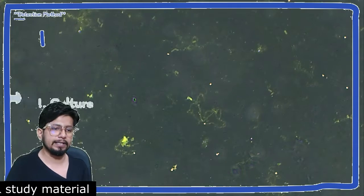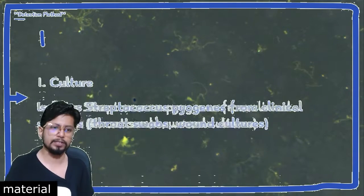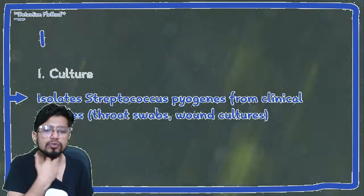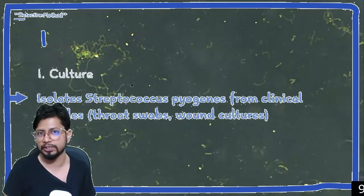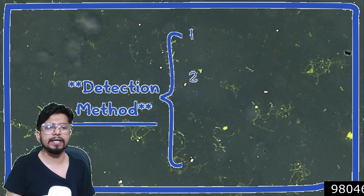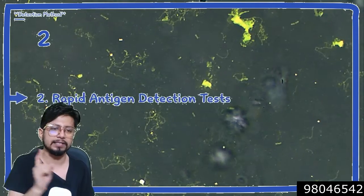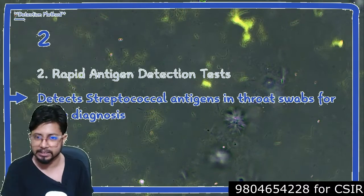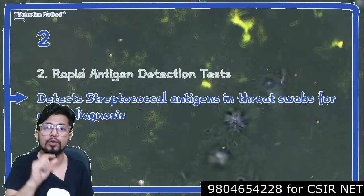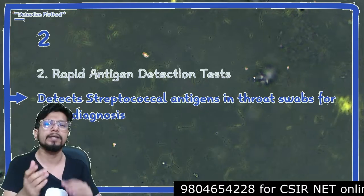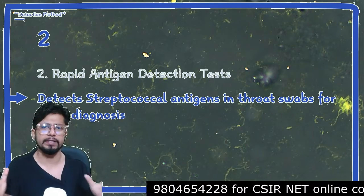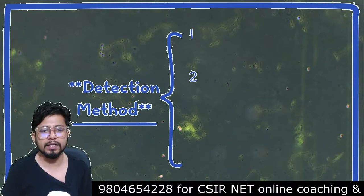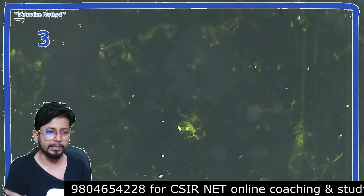The first detection method is culture — isolating Streptococcus pyogenes from clinical samples such as throat swabs and wound cultures. The second method is rapid antigen detection tests, which detect streptococcal antigens in throat swabs for quick diagnosis, similar to small testing kits used for various infections.